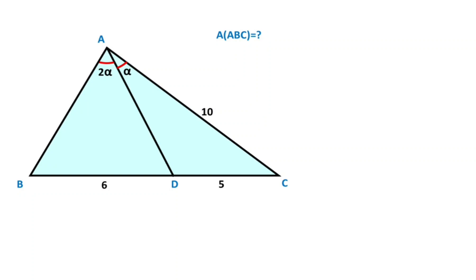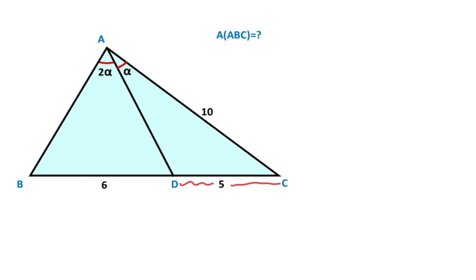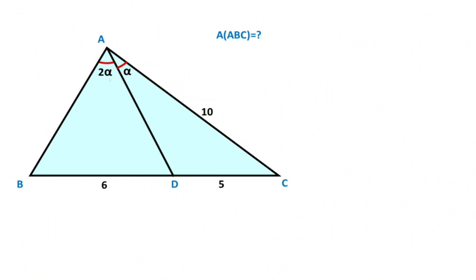Hello everyone. In this video we have one triangle where this length is given as six, here is given five, here is given ten, and the ratio of these two angles is given as two. The question is: what is the area of triangle ABC?